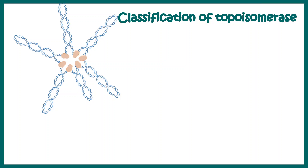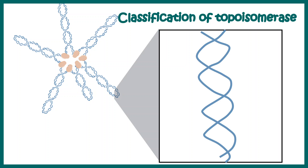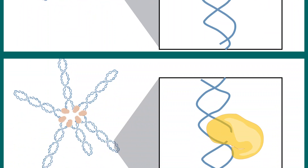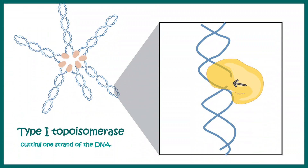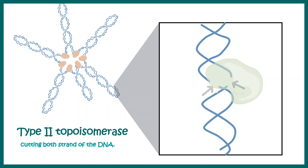Now let's talk about the classification of topoisomerase. There are two categories: type 1 topoisomerase, which cuts only a single strand of the DNA, and type 2 topoisomerase, which cleaves both strands.